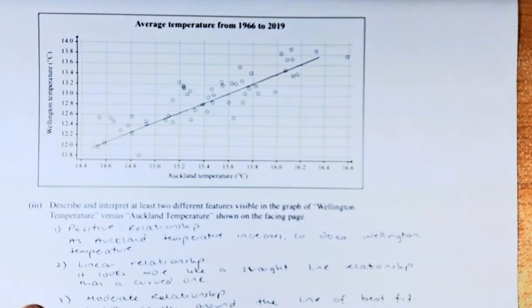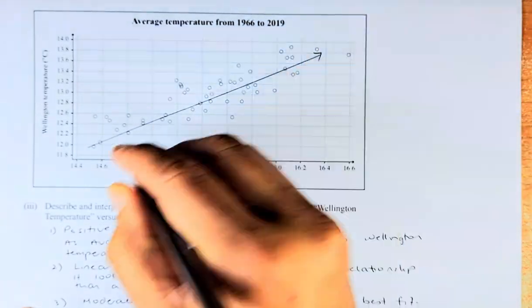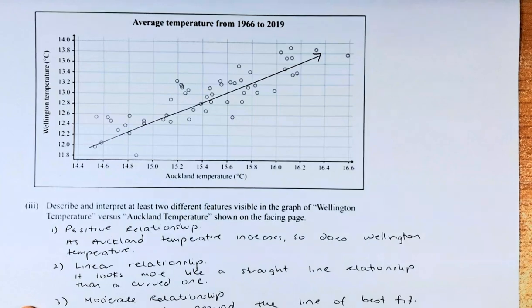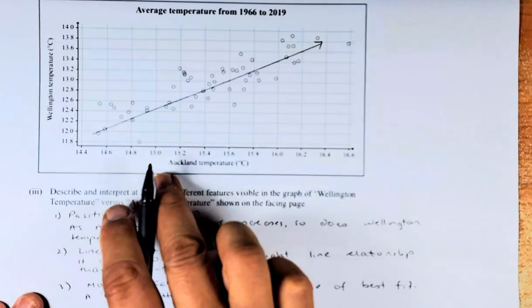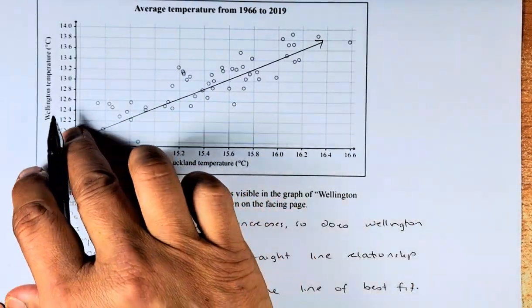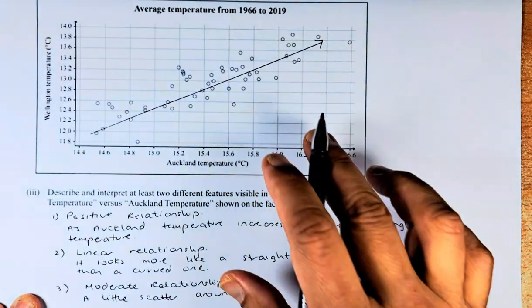First, you must tell them whether it's positive or negative. If the graph is going upwards like this, it means that it is a positive relationship, okay? So as x, or the Auckland temperature increases, the Wellington temperature also increases. So that is your first point.